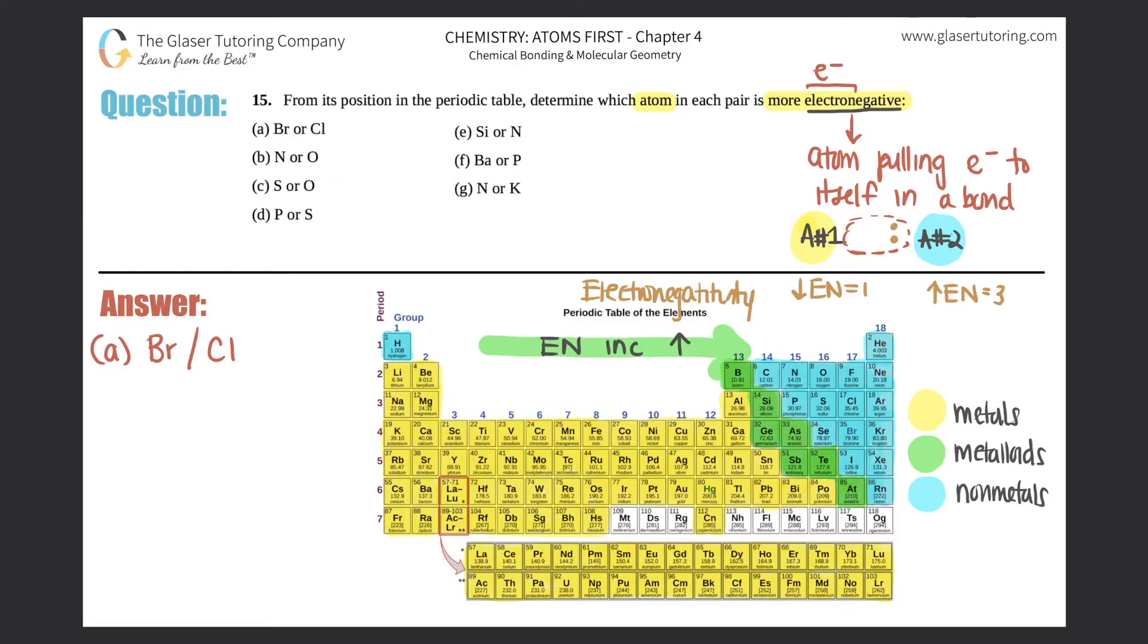So that means as you go across a period, fluorine would be the highest electronegative element as opposed to lithium. Now, remember your noble gases have very low electronegativities because they are inert. They don't really like to react with anyone. So it basically stops here. So fluorine would actually have the highest electronegativity and not neon.